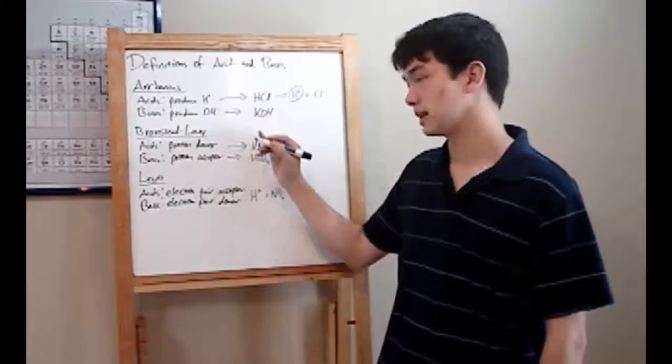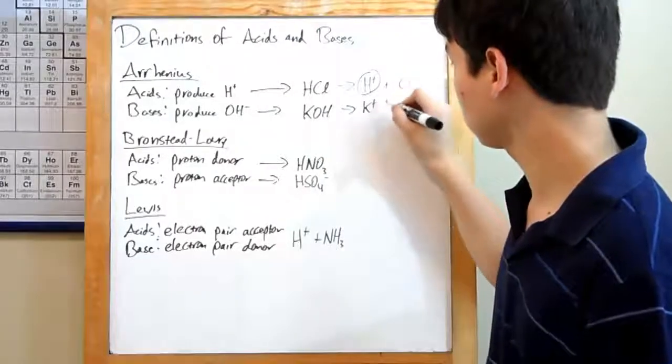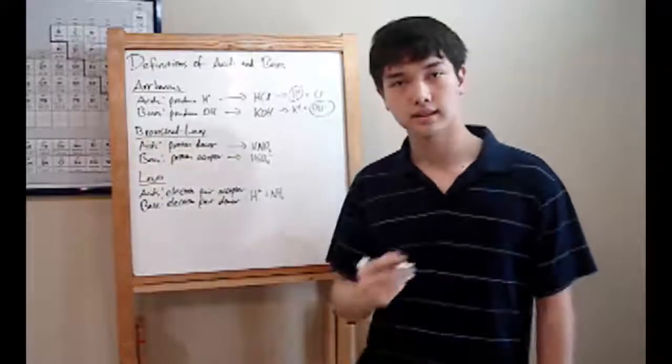An example for a base here would be potassium hydroxide. Put that in solution, it'll produce K plus and OH minus ions. Since it produced a hydroxide ion, it's considered a base.